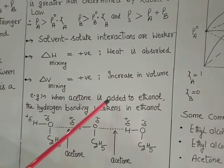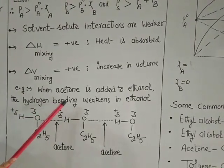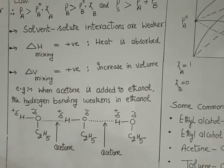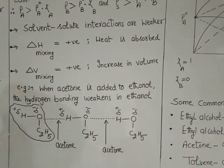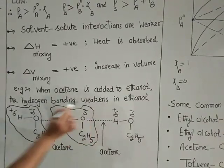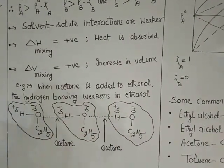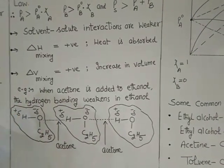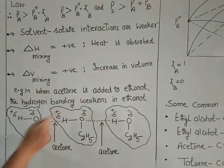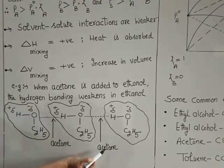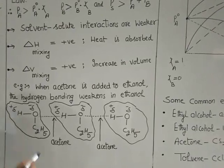Let us study a specific example. When acetone is added to ethanol, the hydrogen bonding within ethanol weakens. Ethanol molecules are connected to each other by hydrogen bonding, which is a relatively stronger intermolecular force. When acetone molecules are mixed into ethanol, they enter the space between the ethanol molecules.